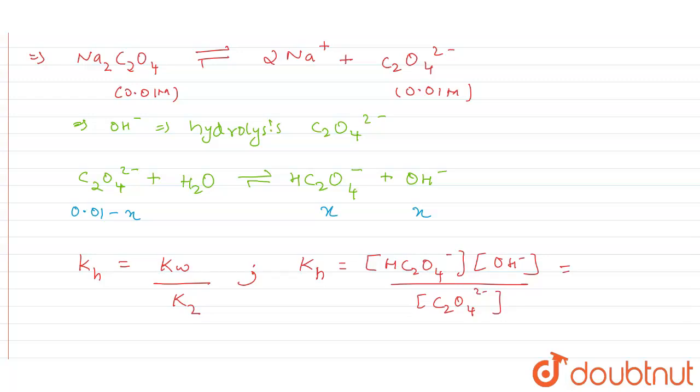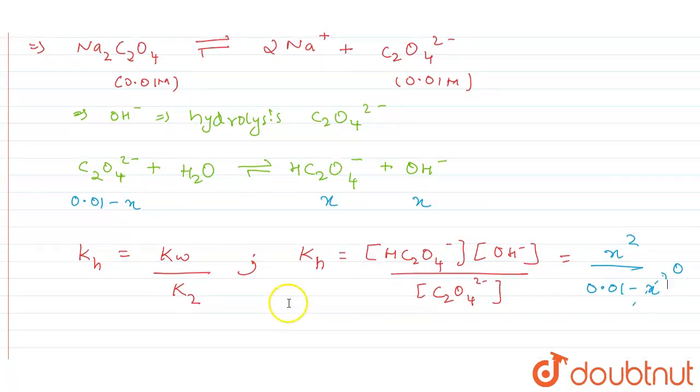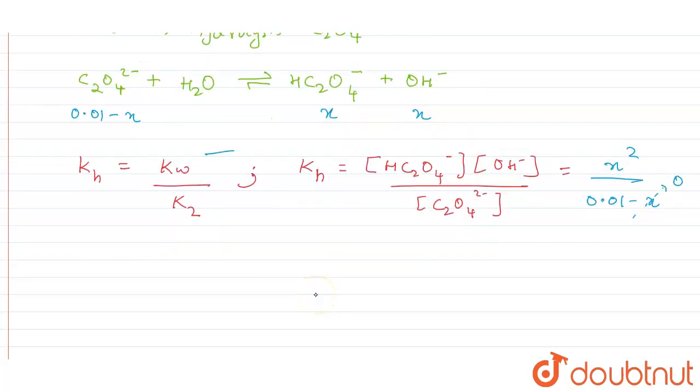This is x and this is x, so this becomes x². I can write it down easily: x² divided by 0.01 minus x. This x is very small, therefore this can be equated as zero.